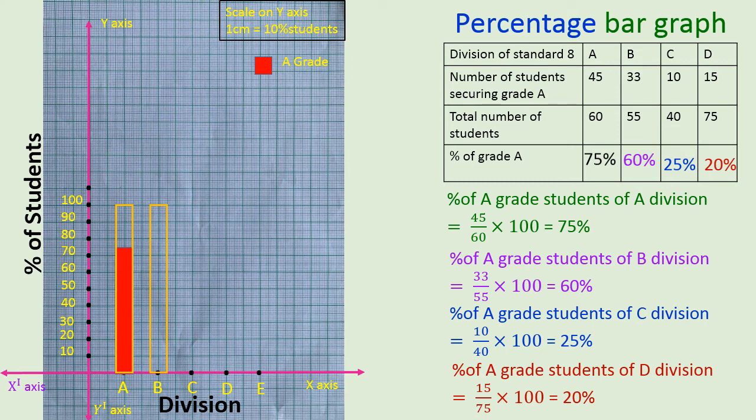Similarly we can go for B division, again 100%, out of which 60 have got A grade. Then C division again 100%, then we have 25%. And D we have again 100% student, out of which only 20% have got grade A. So you can see that percentage bar graph means the height of the bar will be 100 only because that will indicate percentage. Out of which the orange one is indicating the percentage of student who have got A grade.